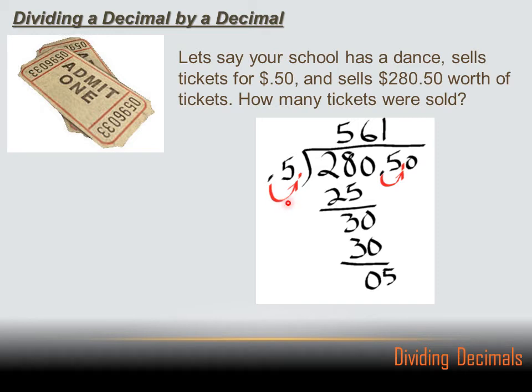And the first thing I do is move my decimal place. And then I got five into 2805.0. And after I divide that out, I get 561. 561 tickets were sold.